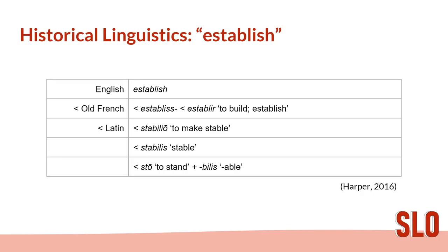Thank you for sticking around. If you've stuck around for so long, let's take a short trip into a slightly different field of linguistics. Do you remember how we said the word anti-disestablishmentarianism has seven morphemes? I want to zoom in on the base word, which is 'establish'. Modern English 'establish' comes from Old French — from 'establiss', a form of the Old French verb 'establir', meaning to build or establish, which in turn comes from Latin.